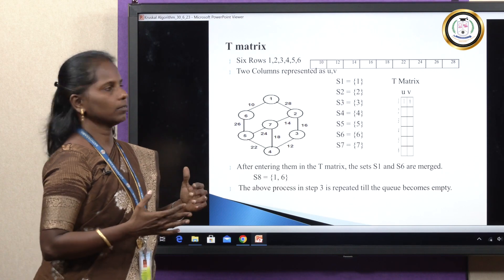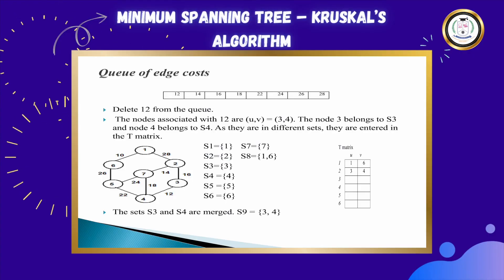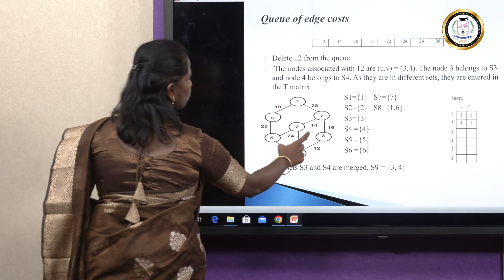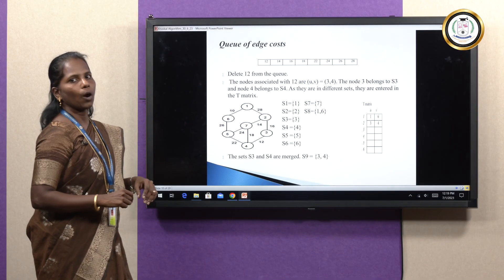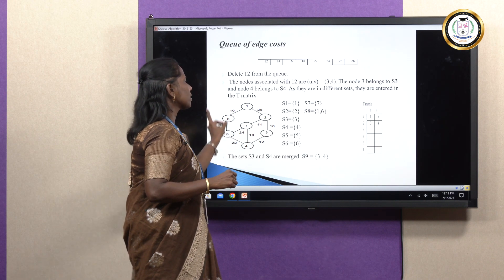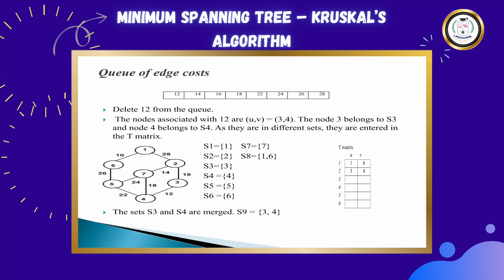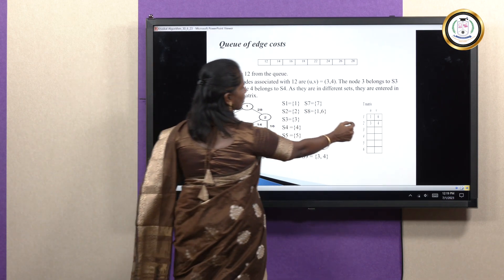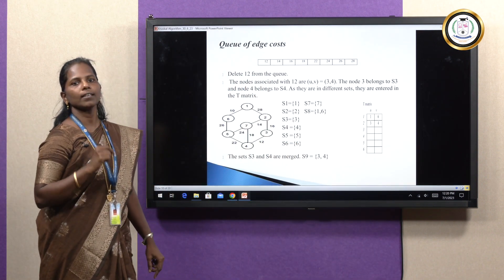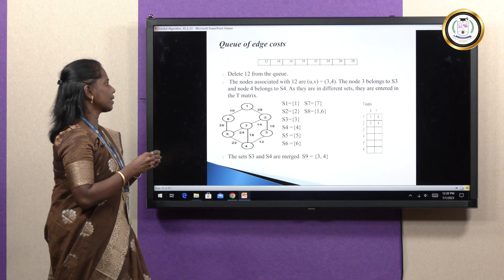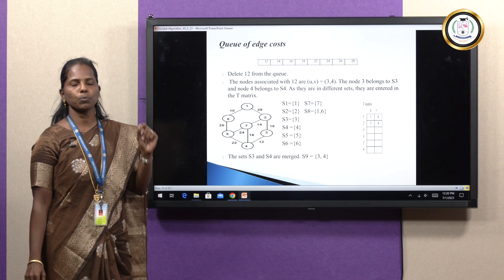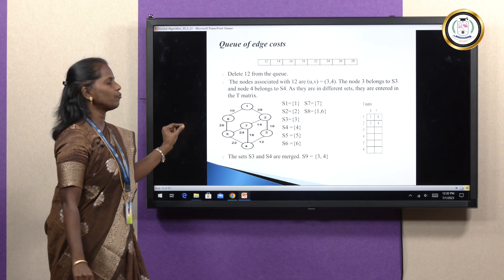In the next iteration, take edge cost 12. Find the nodes associated with 12 — they are 3 and 4. Check if 3 and 4 are in the same set or different sets. 3 is present in set S3 and 4 is present in set S4. Since they are in different sets, enter 3 and 4 in the T matrix as the second entry. After entering, merge S3 and S4 to create a new set called S9.